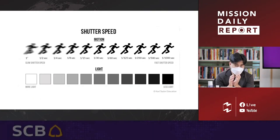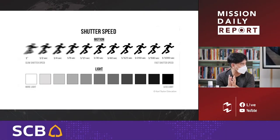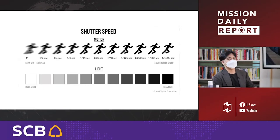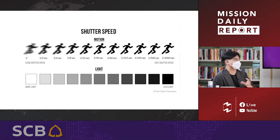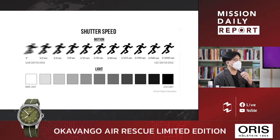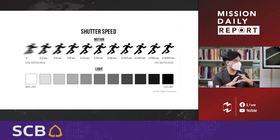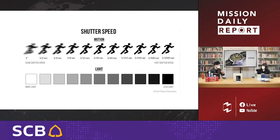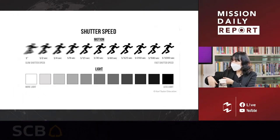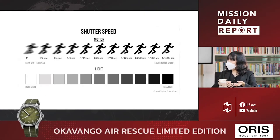If shutter speed is slow, you can see the image will blur. For normal subjects like a person jumping, around 1/200 to 1/250 will capture everything. But if you want to capture a moving car, you need a faster shutter speed — around 1/1000 to 1/2000 — to capture the moment without blur.